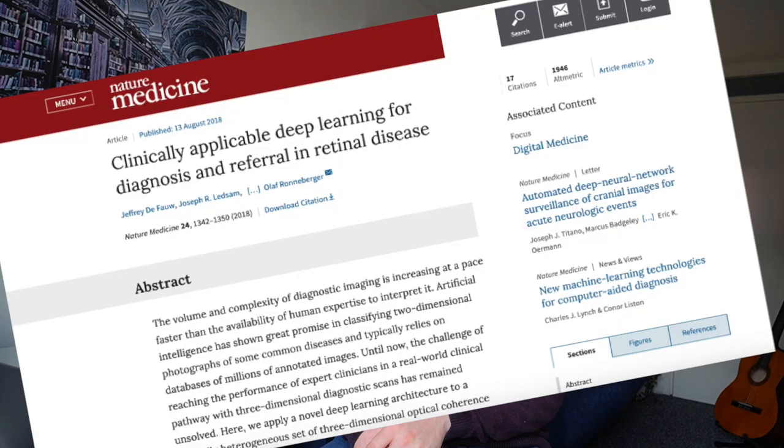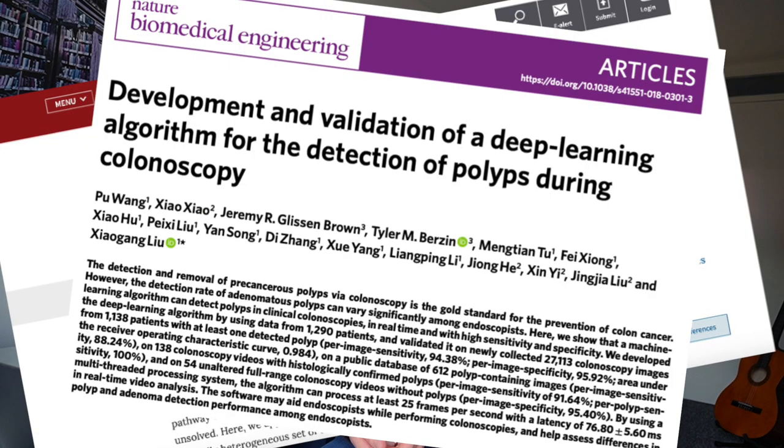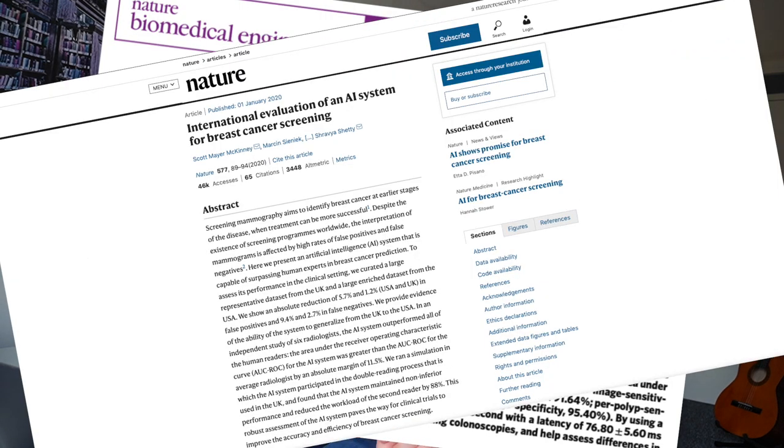Some examples in medicine include diagnosing based on retinal scans, analyzing colonoscopy findings, screening for breast cancers and analyzing skin lesions, just to name a few. But how do these neural networks work and what makes them so special?